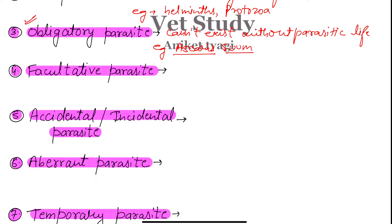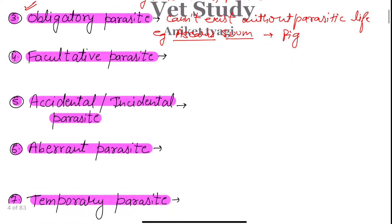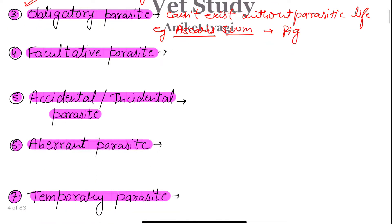This is the example of obligate parasite. Ascaris suum is the parasite of pig and the adult lives in the pig. So that is the obligate parasite — one that must live in a specific host.